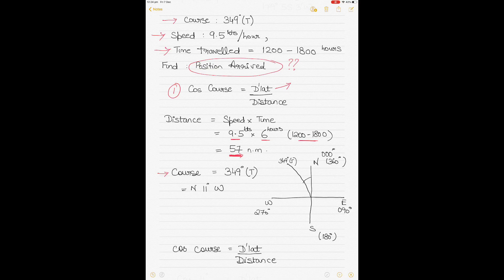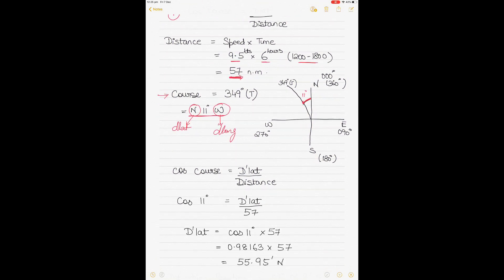For the course, which is given as 349 degrees true, we need to find out the coordinates of the course. As you can see in this figure, 349 degrees true is going from north towards west. Courses are always measured from north or south. 349 lies between north and west by a value of 11 degrees, so your course coordinates are N 11° W. We need to do this because the north and west give us indication of what to name our d lat and d long once we find it. Now we know we are on a north westerly course and we can apply the d lat and d long accordingly.